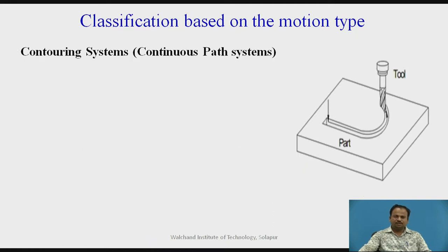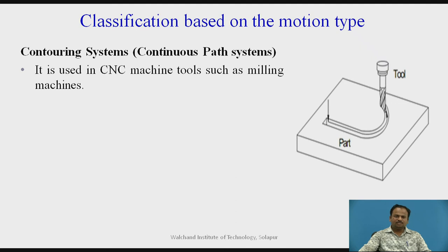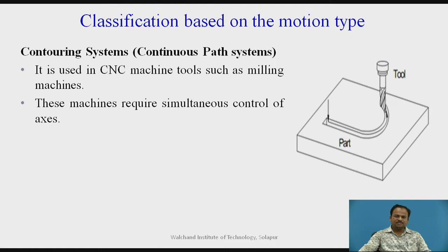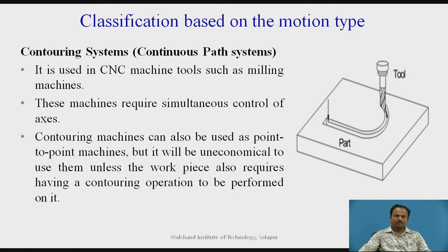The next one is the contouring system, also called the continuous path system. As shown in the figure, it is used in CNC machine tools such as milling machines. These machines require simultaneous control of axes. Contouring machines can also be used as point to point machines, but it will be economical to use them only when the workpiece also requires a contouring operation to be performed on it.